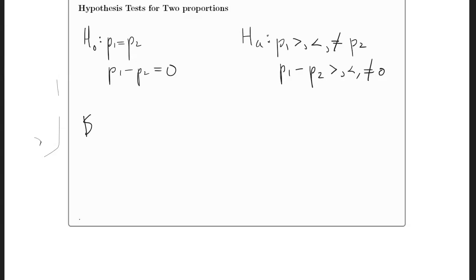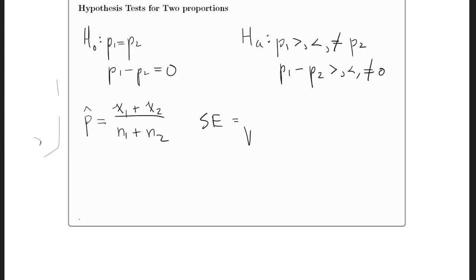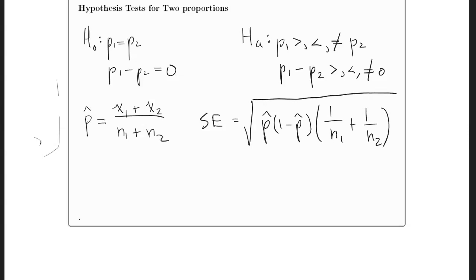The standard error for the hypothesis test uses a pooled sample proportion, because the hypothesis test assumes the two proportions are equal. To estimate that common proportion, we pool the two samples: total successes divided by total trials. The standard error is then the square root of the pooled proportion times its complement times (1/n1 + 1/n2). The test statistic is p̂1 minus p̂2, minus zero (the null hypothesis value), divided by that standard error.